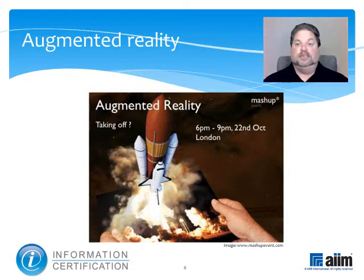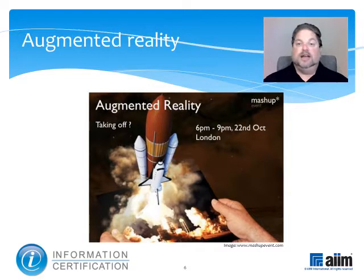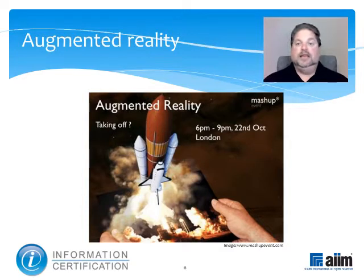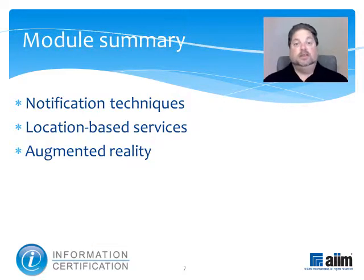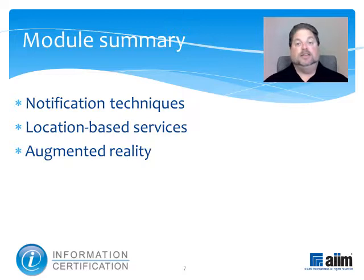One familiar example is the use of the yellow first down line superimposed on the field in television broadcasts of American football games, which is applied to make clear how far the team on offense must advance the ball to receive a first down. Similarly, TV networks often display virtual messages on the walls of baseball parks that are real. This module has explored three important aspects of mobile applications: notification techniques, location-based services, and augmented reality.